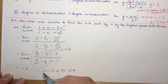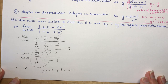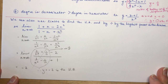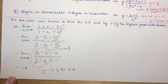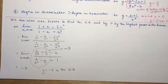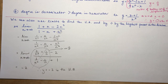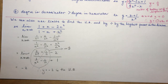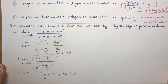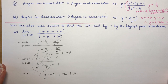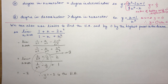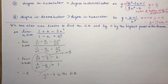Therefore, y = −2 is the horizontal asymptote. Remember it is the equation of a line. That's a quick summary of vertical, oblique, and horizontal asymptotes. In the next lesson I'll do a complete analysis of a rational function with an oblique asymptote, because they're kind of tricky.